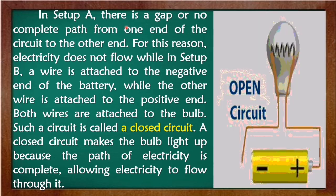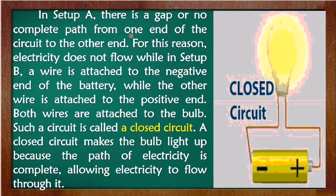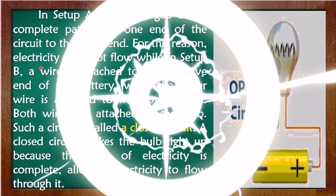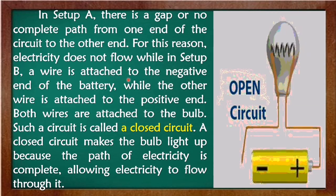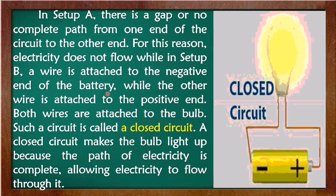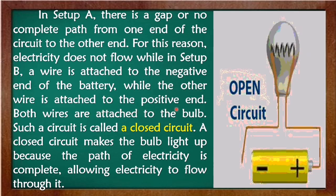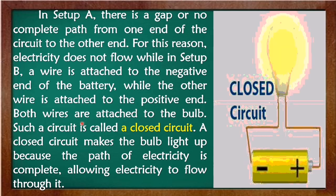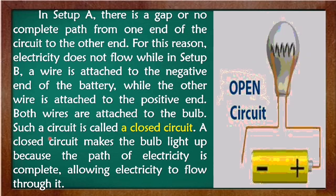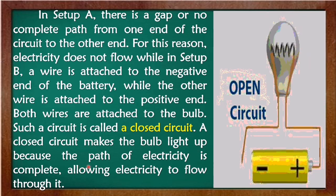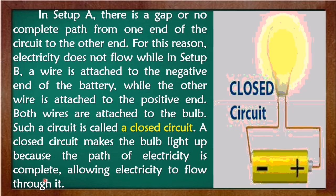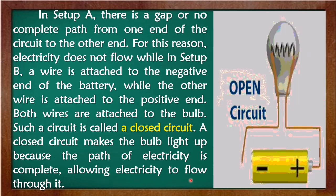In setup A, there is a gap or no complete path from one end of the circuit to the other end. For this reason, electricity does not flow while in setup B, a wire is attached to the negative end of the battery, while the other wire is attached to the positive end. Both wires are attached to the bulb. Such a circuit is called a closed circuit. A closed circuit makes a bulb light up because the path of the electricity is complete, allowing electricity to flow through it.